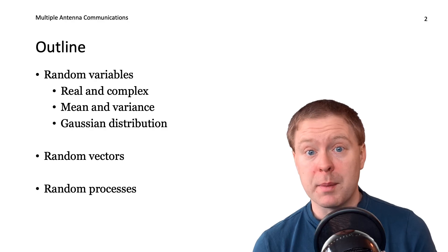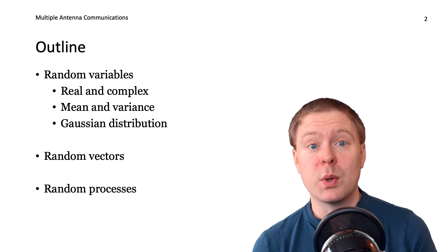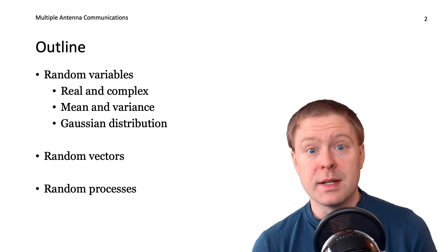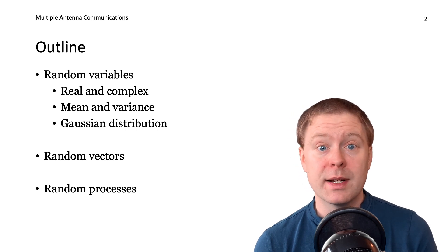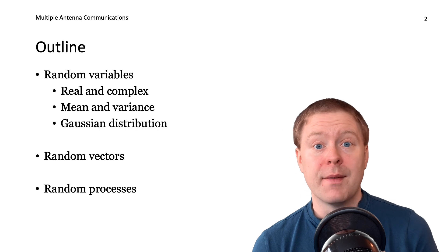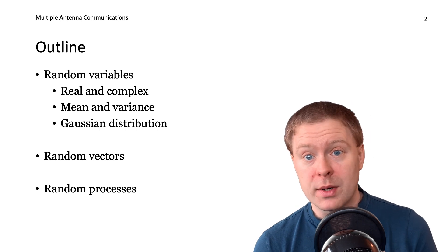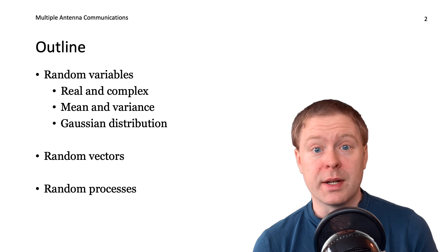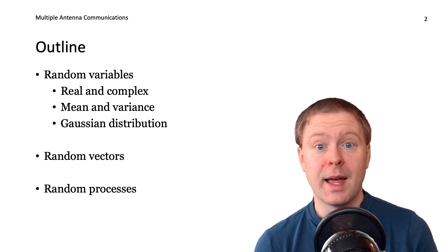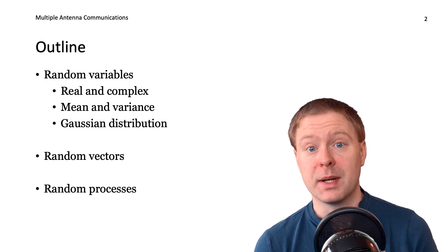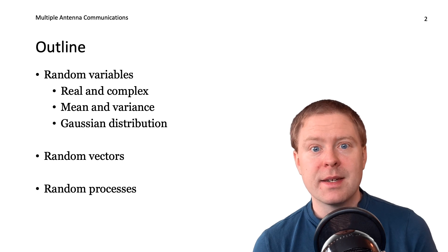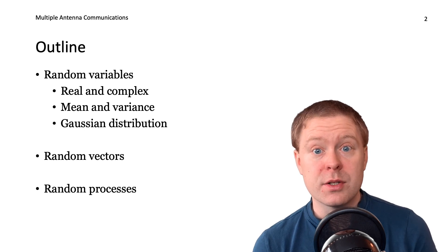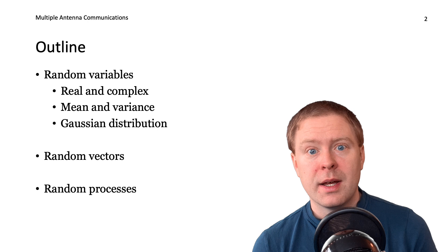In this video I will talk about probability theory for random numbers. These can be either real or complex valued. They have a mean and a variance that we will define and compute, and one particularly important example is the Gaussian distribution, both in the real and the complex case. We will extend this theory from scalars to vectors, and then from vectors to processes.